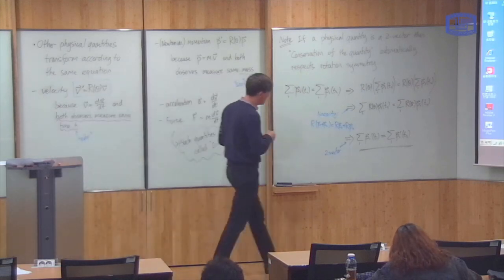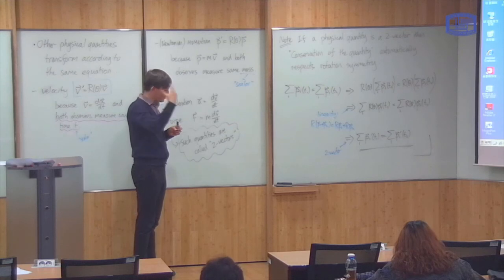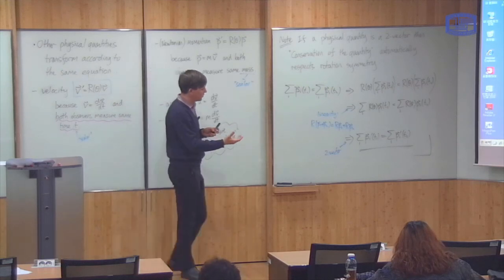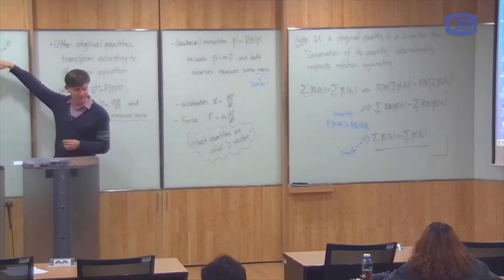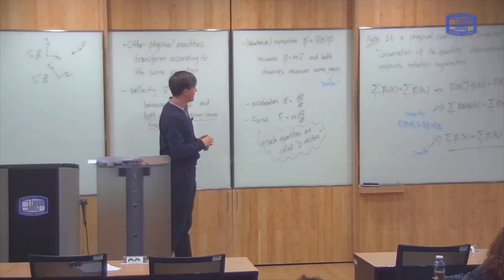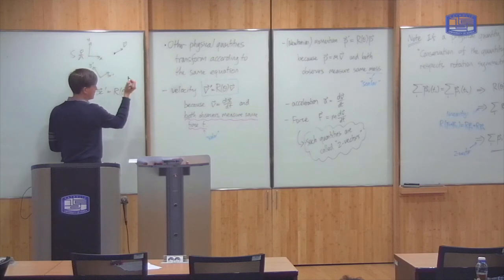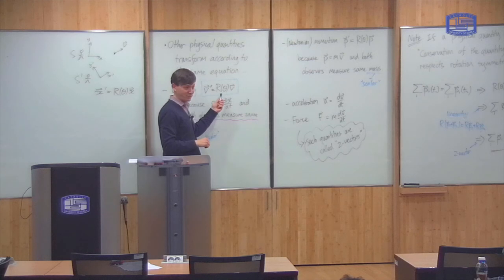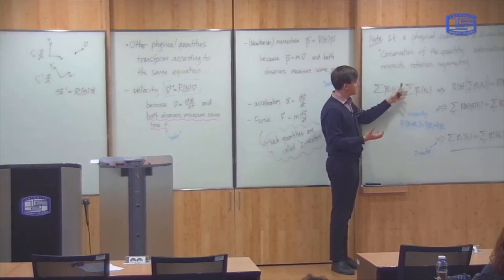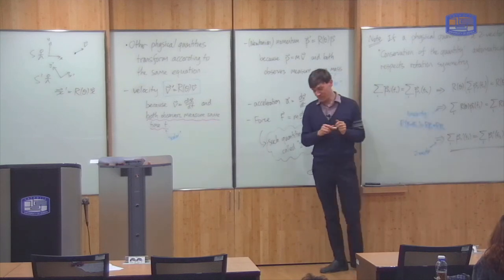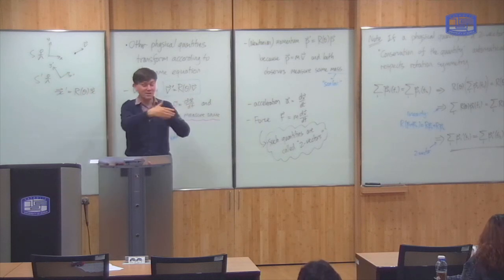That's the end of the analogy. To summarize: we considered two observers related by rotation, showed that coordinates have a special transformation property described by a matrix, showed that other physical quantities share the same transformation property, and showed that if any quantity has this two-vector property, then conservation of that quantity automatically respects the symmetry. Our strategy now is to do exactly the same thing for the Lorentz transformation — two observers with different velocities rather than a rotation.